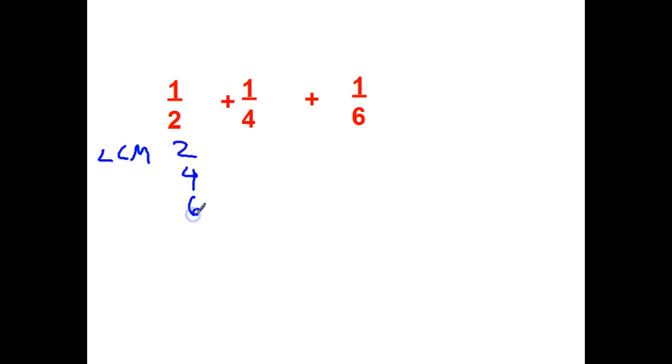I'm counting by twos over here: two, four, six, eight, ten, twelve, fourteen. Counting by fours: four, eight, twelve. I'm going to stop there because I see I've got twelve in both of those lines and an eight in both lines. And six, twelve, there we go. The lowest number I have in all three lines is a twelve.